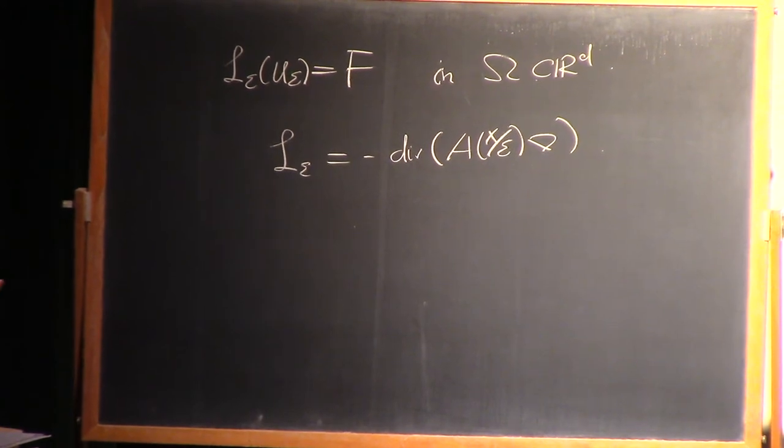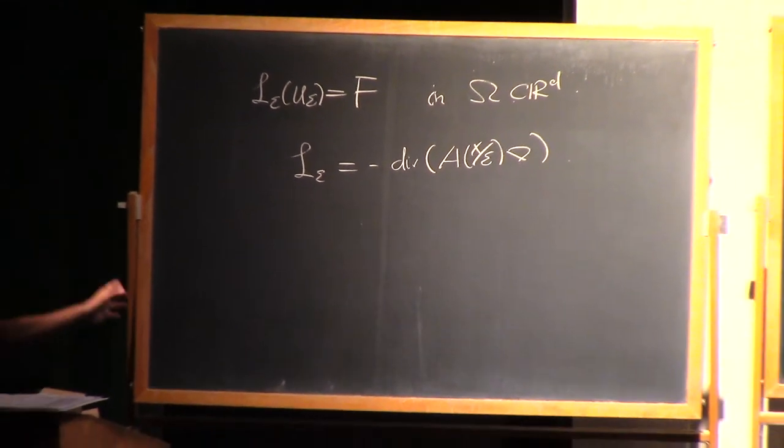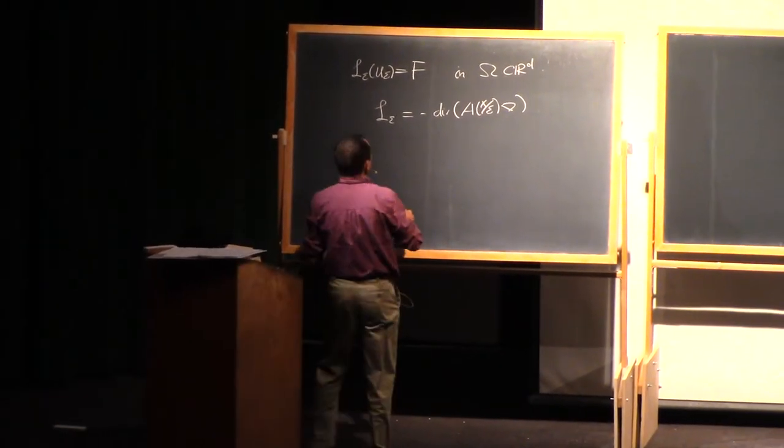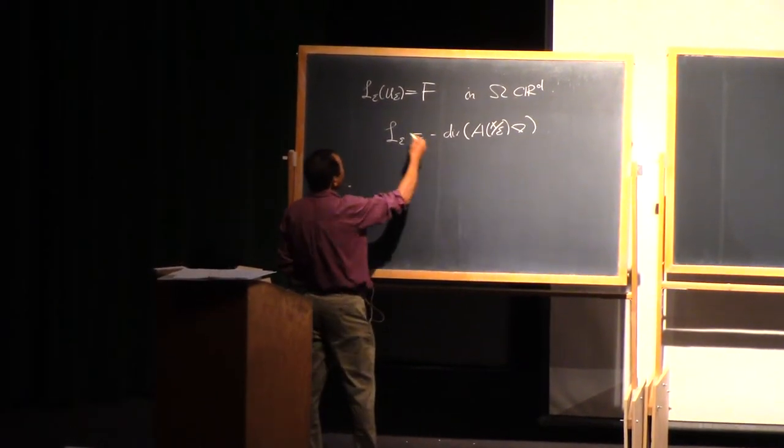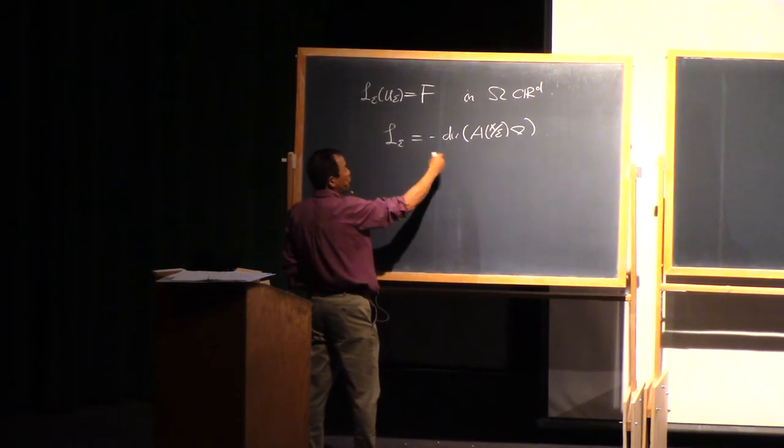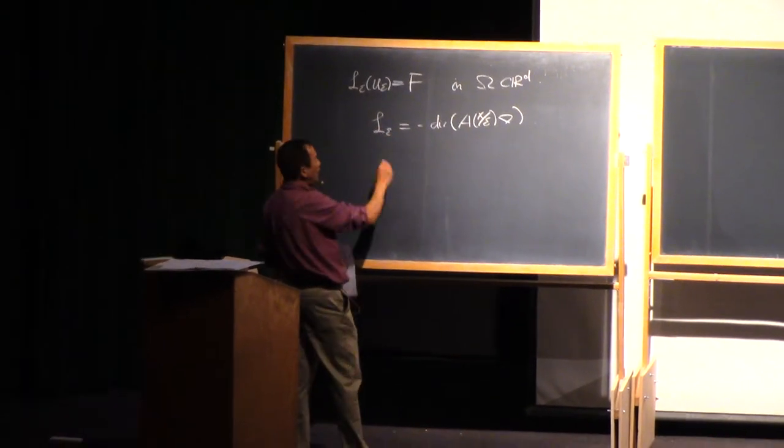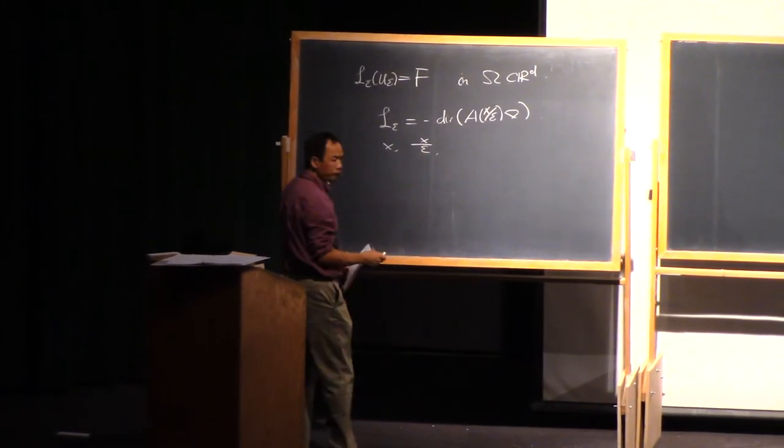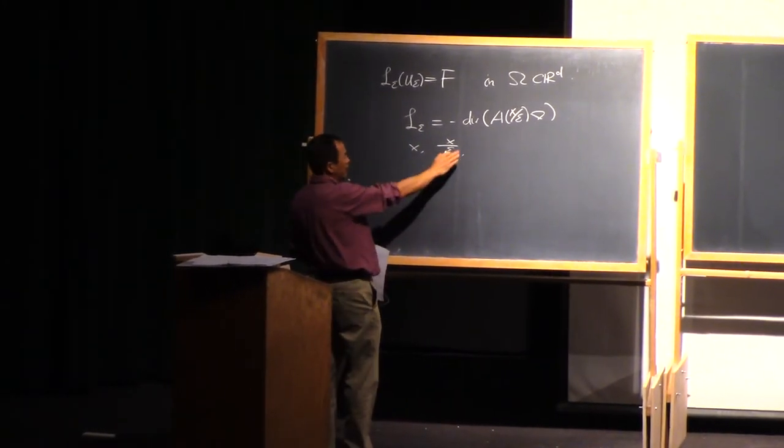No smoothness is needed for today's lecture. When you look at this equation, you actually see two scales. One is x, another is x over y. This is referred to as a slow variable and a fast variable.